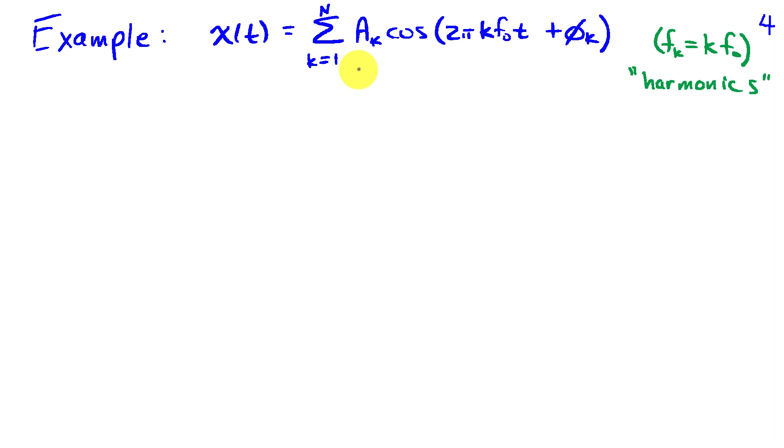So in this case I have the signal as a sum of cosines but the cosines have a special relationship in their relative frequencies. If I think of the kth cosine as having frequency f k, then f k is an integer times f naught. These are called harmonics.